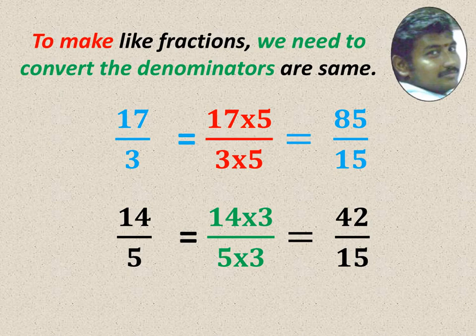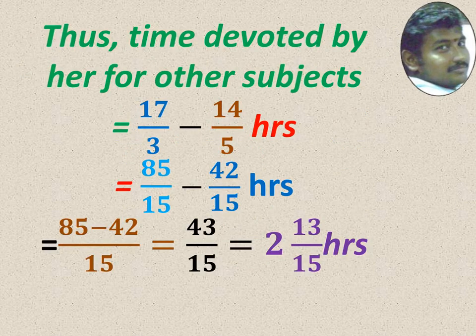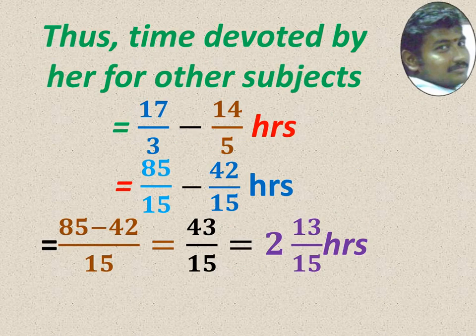17 by 3, we multiply 5 by 5. So we get 85 by 15. 14 by 5, we multiply numerator and denominator 3. So we get 42 by 15. 17 by 3 is equal to 85 by 15. 14 by 5 is equal to 42 by 15. Now easily we can subtract.